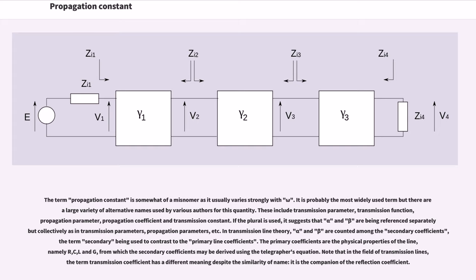The term propagation constant is somewhat of a misnomer as it usually varies strongly with omega. It is probably the most widely used term but there are a large variety of alternative names used by various authors for this quantity. These include transmission parameter, transmission function, propagation parameter, propagation coefficient and transmission constant. If the plural is used, it suggests that alpha and beta are being referenced separately but collectively as in transmission parameters, propagation parameters, etc. In transmission line theory, alpha and beta are counted among the secondary coefficients, the term secondary being used to contrast to the primary line coefficients.